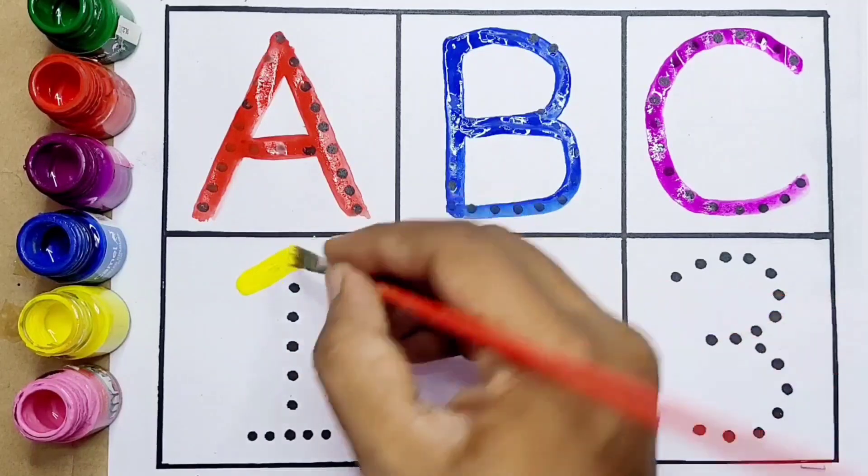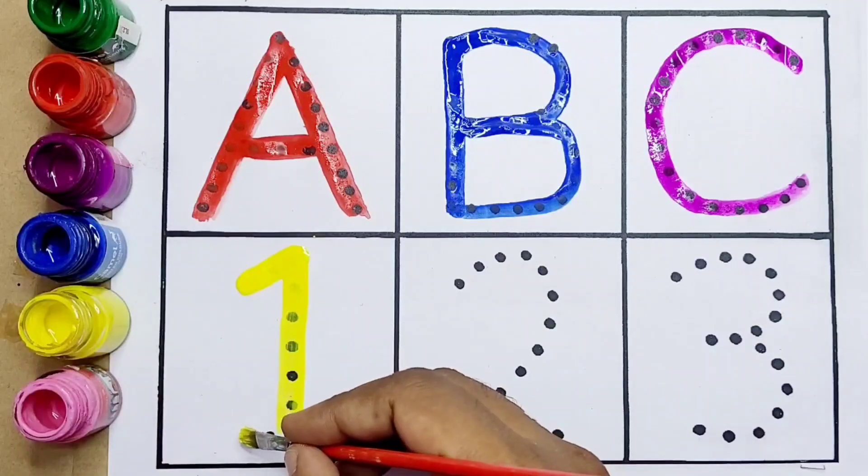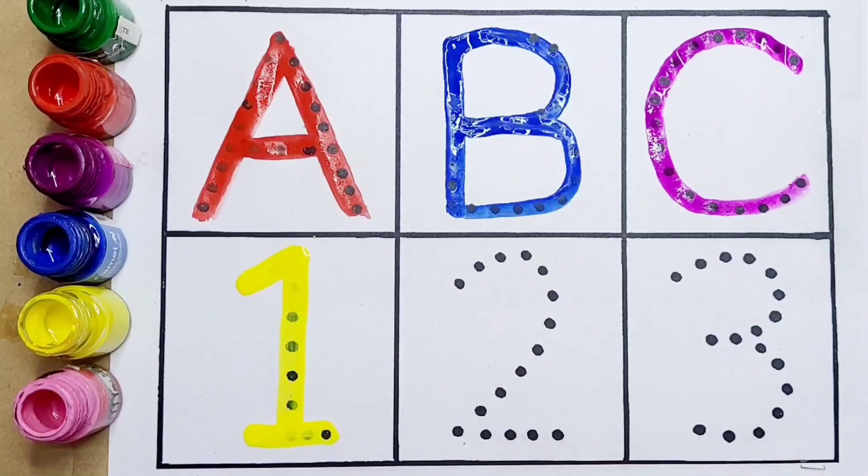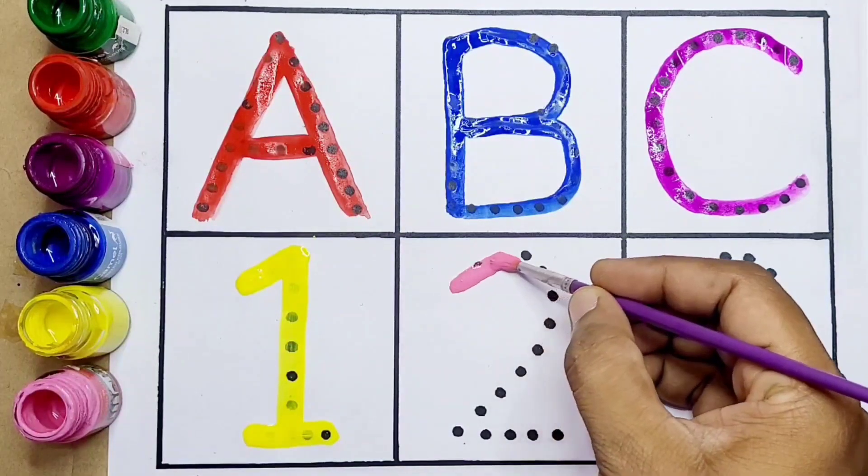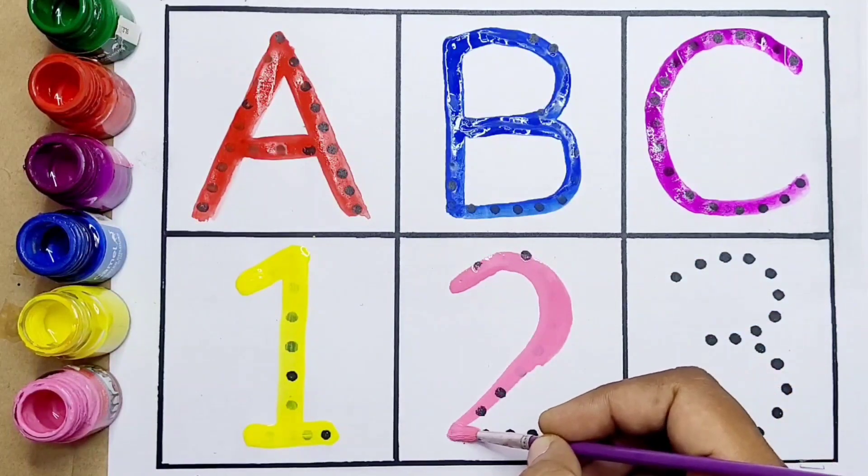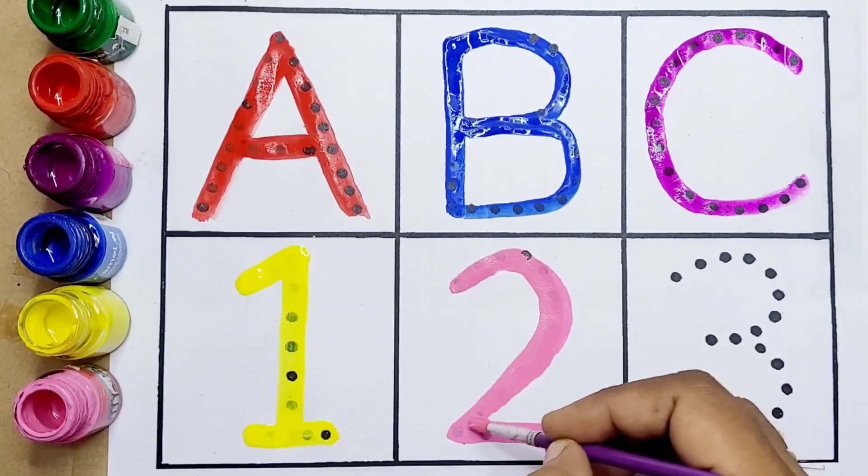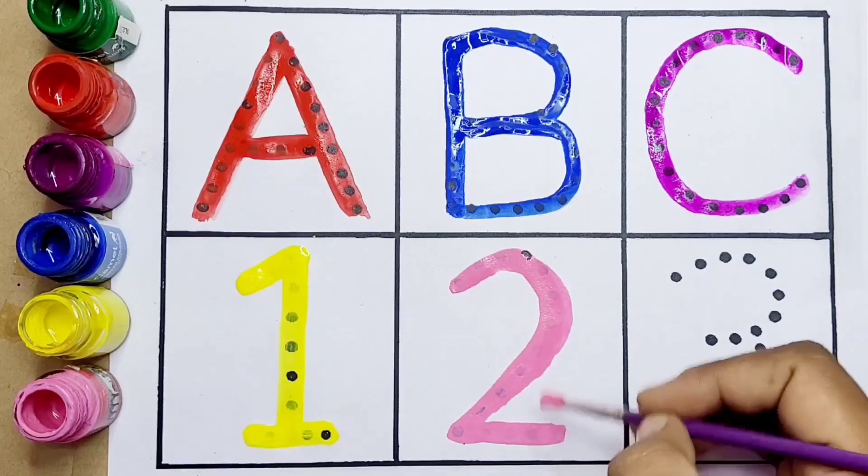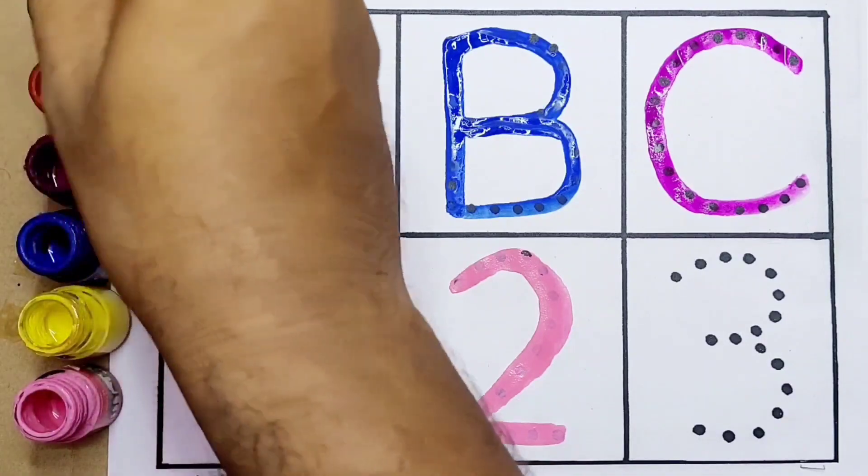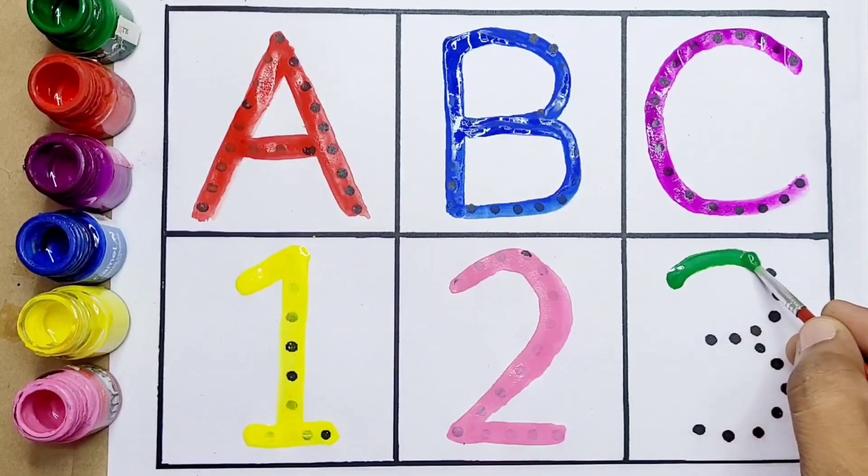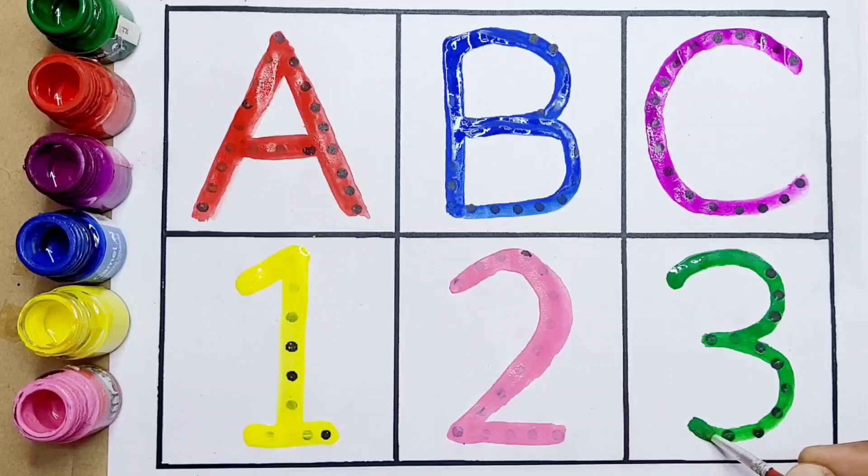This is number one. O-N-E, one. Next, number two. T-W-O, two, number two. This is number three. T-H-R-E-E, three, number three kids.